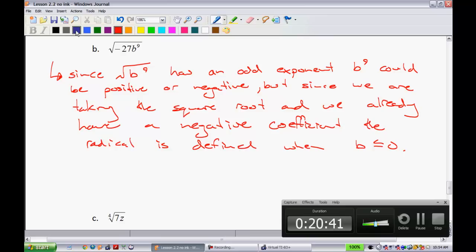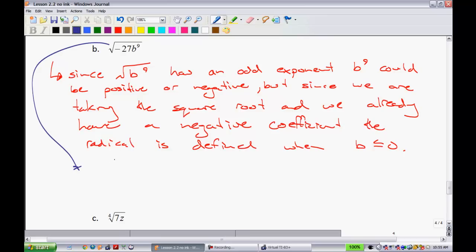So now let's go ahead and simplify. We have the square root of negative 27b to the 9th. And if we simplify this, we're looking for perfect squares that go into 27. We have a 9 times a negative 3. And now with the b's here,